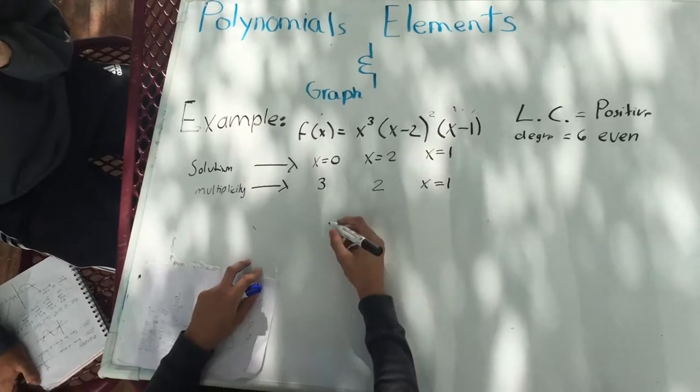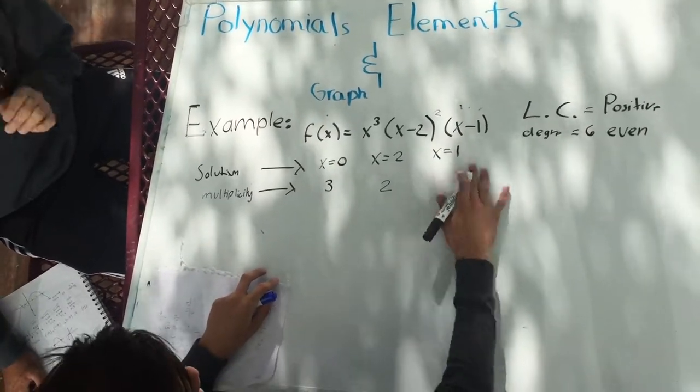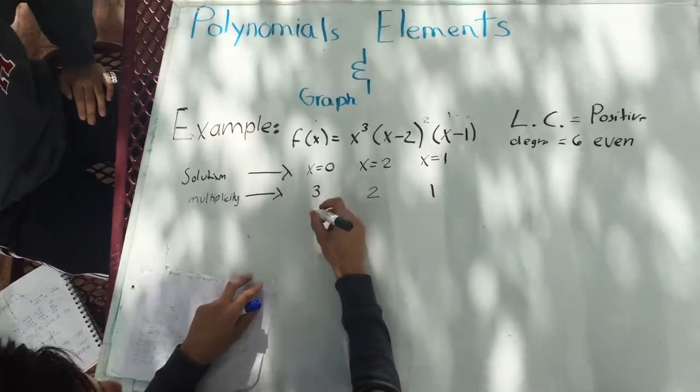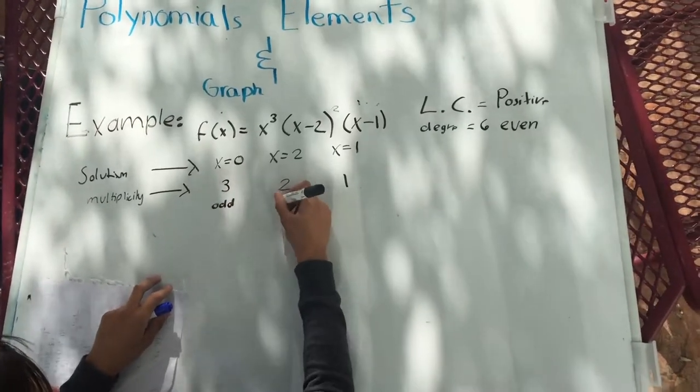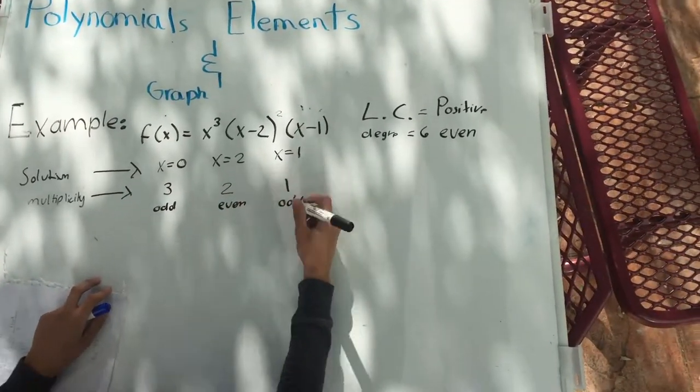Because the multiplicity is odd in the first factor it will cross. Because it is even in the second factor it will bounce. And because it is odd in the third factor it will cross.